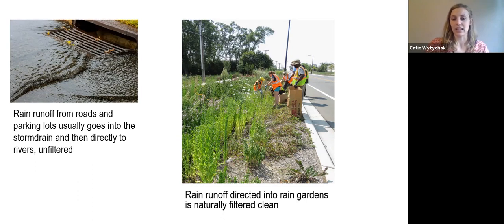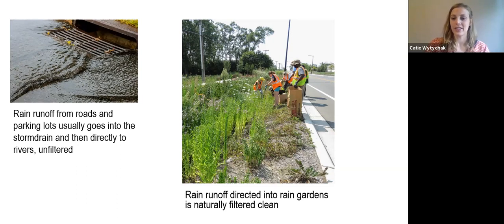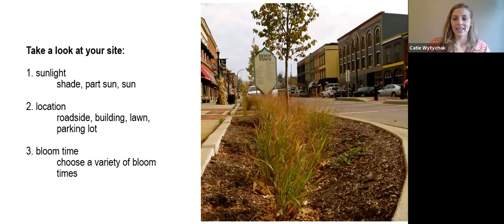You can see this is a rain garden on Stone School Road, and it's capturing all of the water on the stretch of road that lands on it. All that dirty water goes into the rain garden and it ends up getting filtered clean.